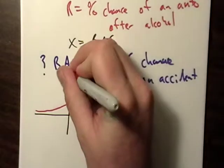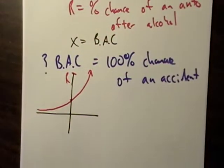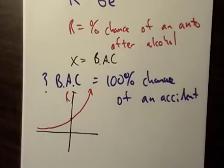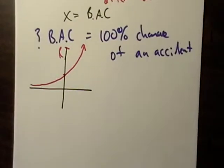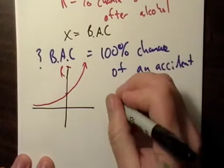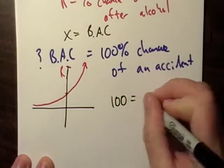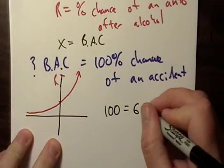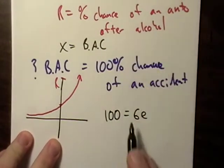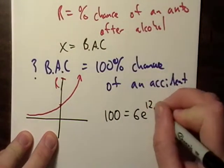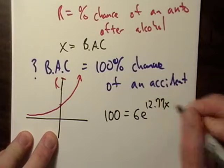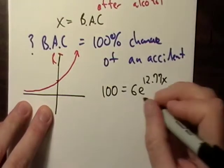So when R is equal to 100, that's what we're interested in. So that's what we're going to do. That's the approach we're going to take. We're going to set R equal to 100, and then we're going to solve for X, which is our BAC. So let's do that.